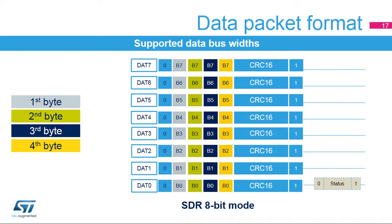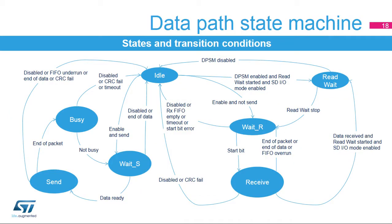For each SDMMC CK clock cycle, a byte is shifted out with a start bit, end bit, and CRC16 checksum on each data line. When the data is sent to the card, the card returns a CRC status on the SDMMC D0 pin. The Data Path State Machine (DPSM) controls the transmission and reception of all data. Note that the DPSM enable bit must not be used to transfer data with SD, SDIO, and MMC cards.